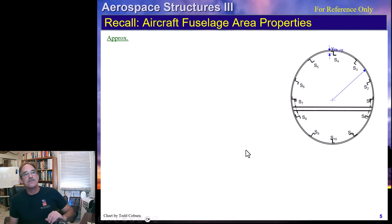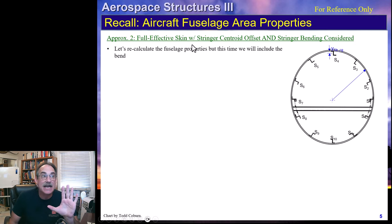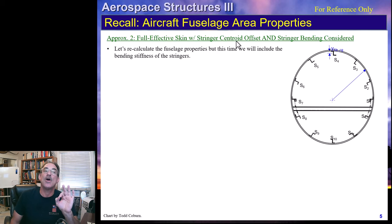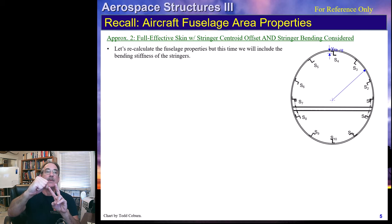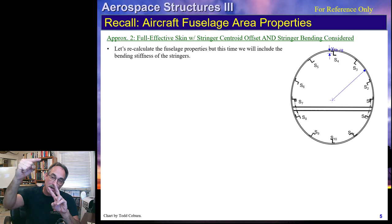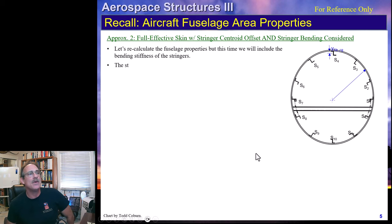Now let's look at full effective width of skin but with the stringer centroid offset from the skin, and also accounting for stringer bending stiffness. That means we shift the stringer location by its centroid offset from the skin radius, giving a slightly different effective radius. The X and Y position calculations are otherwise the same. We'll see what effect this has.